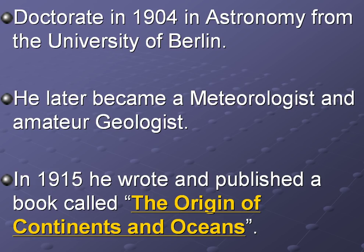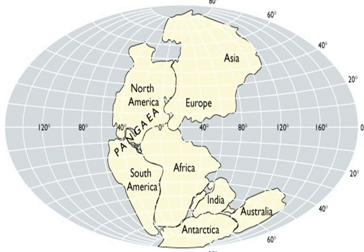Especially during World War I, generals needed to know what the weather would be like — whether to order a front to move forward or hold their ground. So in 1915, Wegener wrote and published a book called 'The Origins of Continents and Oceans,' and it was in this book that he actually proposed the idea that the continents moved. He was suggesting that all these continents — North America, Asia, South America, Africa, India, Antarctica, Australia — were all connected. You can see they're all connected in the Pangaea configuration.